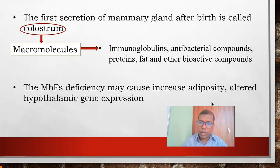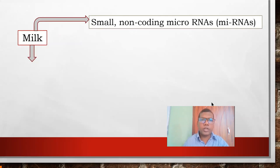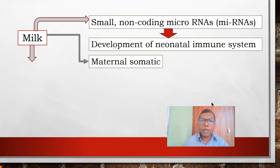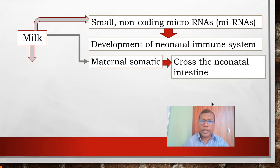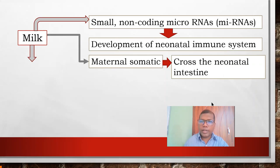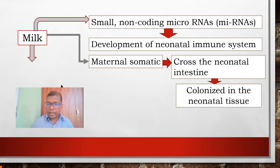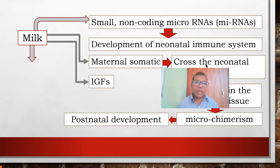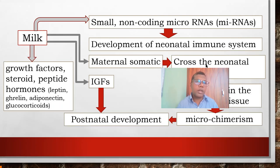Milk also contains small non-coding microRNA, which has a role in the neonatal immune system. It also contains maternal somatic cells that cross the neonatal intestine and can colonize in neonatal tissue through microchimerism, affecting postnatal development. Milk also contains insulin-like growth factor, and many factors such as growth factors, steroids, peptide hormones, leptin, ghrelin, adiponectin, and glucocorticoids also influence postnatal development.